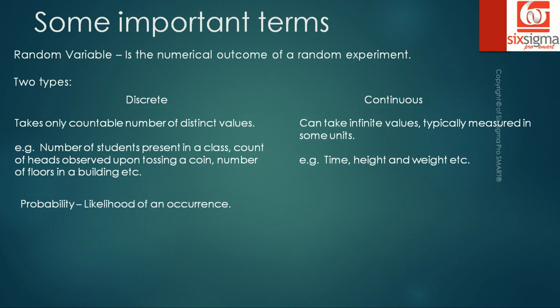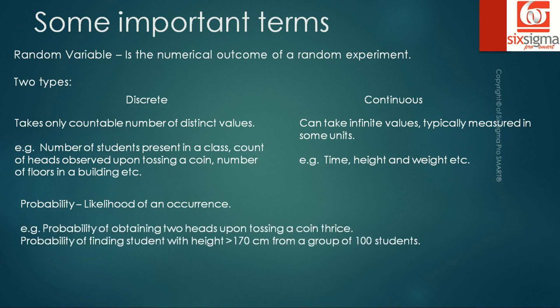Let's understand the concept of probability. Probability is nothing but the chance or likelihood of an occurrence. For example, probability of obtaining two heads upon tossing a coin thrice, or probability of finding a student with a height greater than 170 centimeters from a group of 100 students. We'll cover probability in one of our later lectures, but for now you know these are the kind of common terms that are talked about.